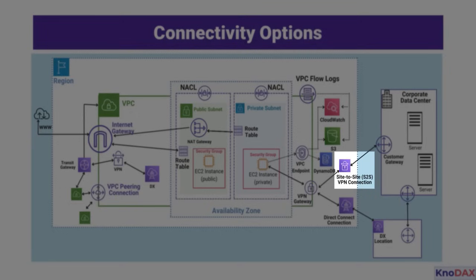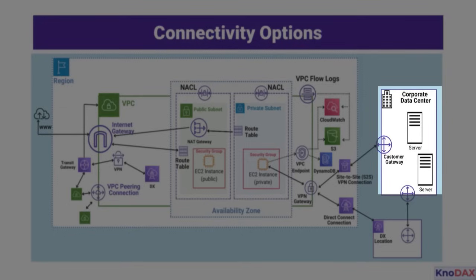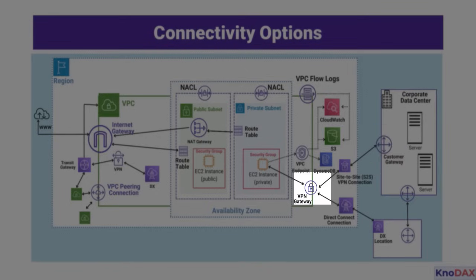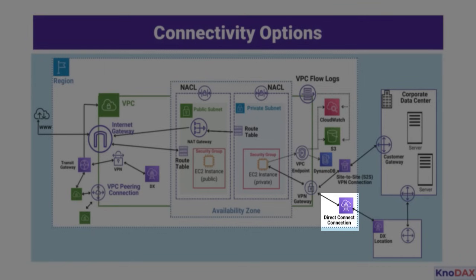Site-to-site VPN connections link the VPC to on-premises resources via a customer gateway and VPN gateway. For high-performance, low-latency connectivity, a Direct Connect (DX) connection links the corporate data center directly to the VPC via a DX location.